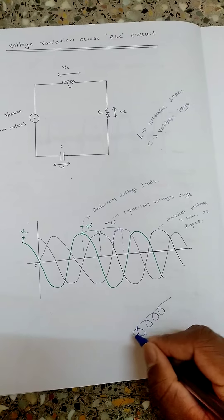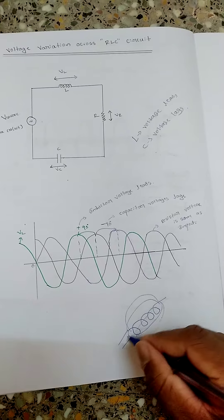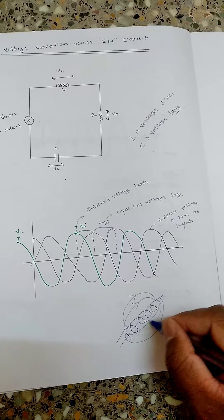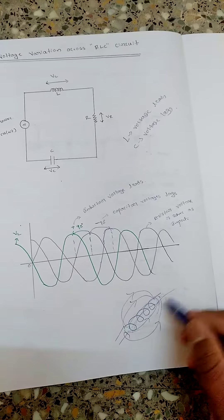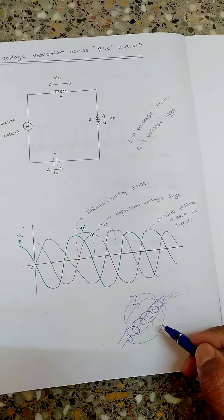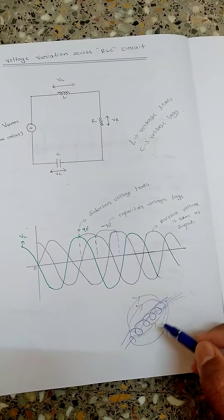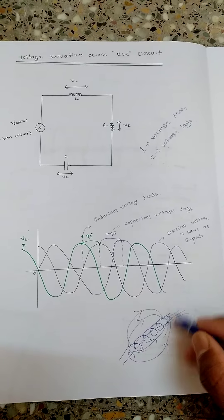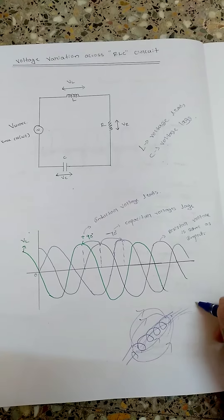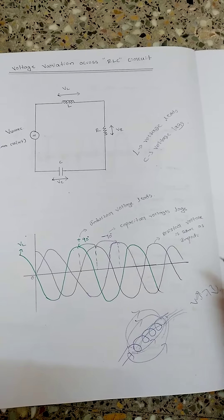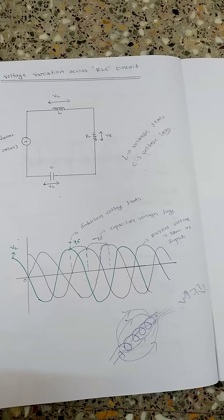For the inductor, when you pass a current through it, it will induce a magnetic field. According to Lenz's law, this magnetic field will limit the amount of current flowing through the inductor. It will try to decrease the current because the electric and magnetic fields oppose each other. So the voltage will be leading because the inductor opposes the current, not the voltage. That is why voltage leads in the case of an inductor.